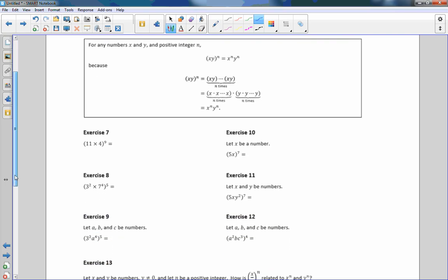Next rule. For any numbers X and Y and positive integers n, X times Y to the power of N equals X to the N times Y to the N. This is just simply a distributive property. We're going to distribute the power to each thing inside the parentheses. So all we're going to do here is distribute. So this is going to become 11 to the 9th times 4 to the 9th.